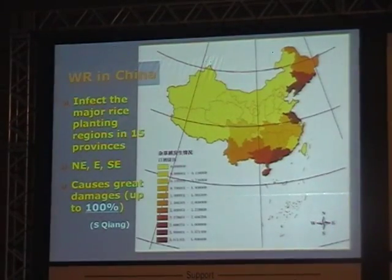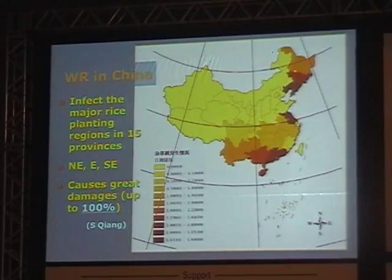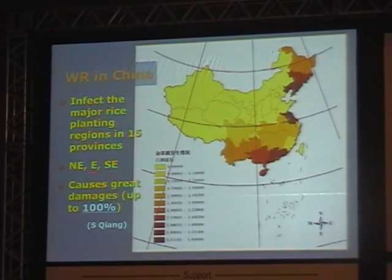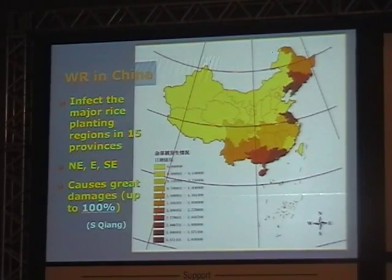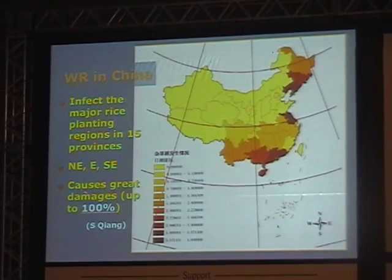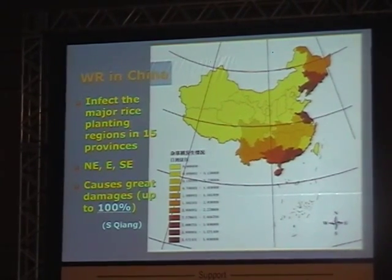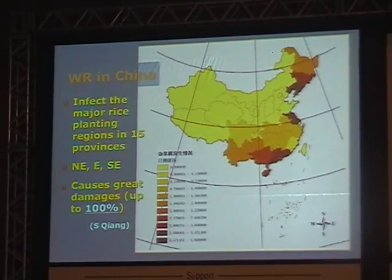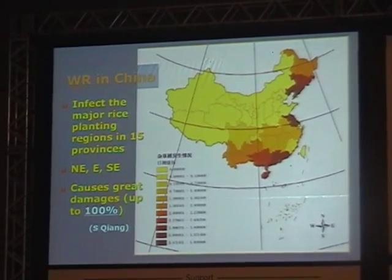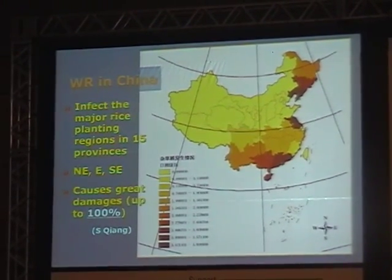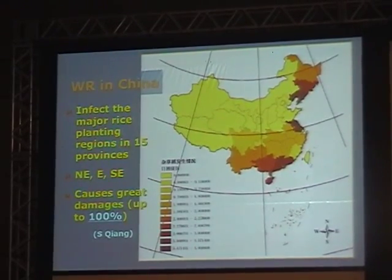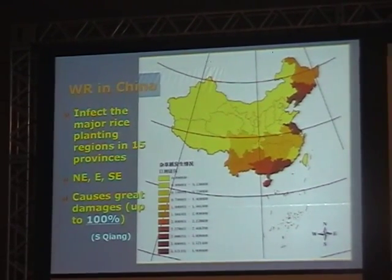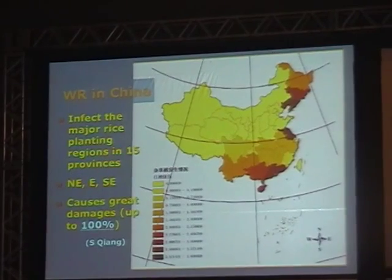In China, weedy rice is found in many provinces from north to south. It's very bad, causing damage up to 100%. This year our team went to production fields and some farmers gave up their rice fields entirely because weedy rice was too abundant. So they had no harvest at all.